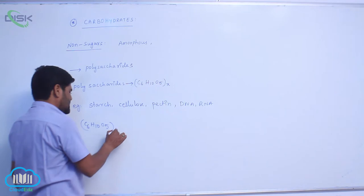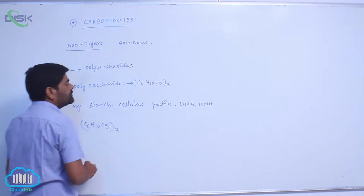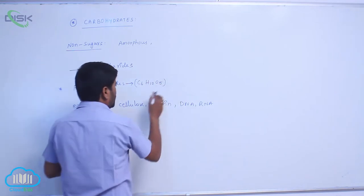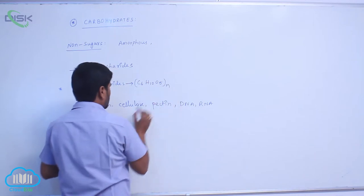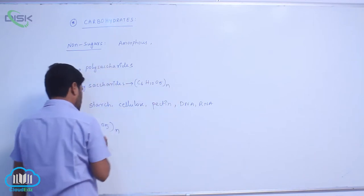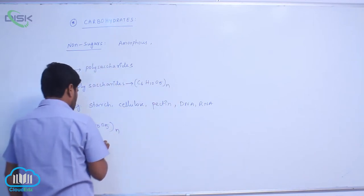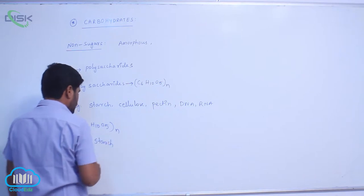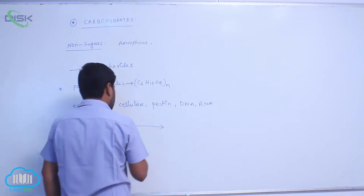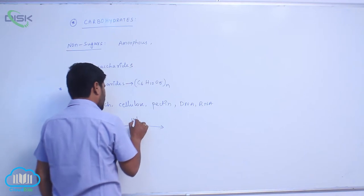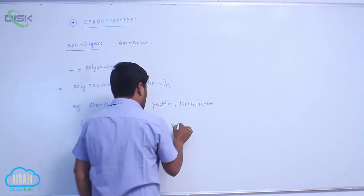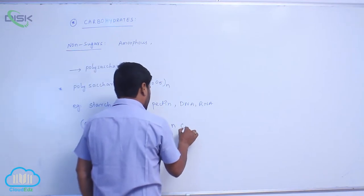In the formula C6H10O5, the variable is N — not X — where N represents the number of repeating units. For example, starch on hydrolysis gives N molecules of glucose.